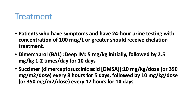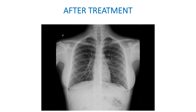Treatment for mercury poisoning is dimercaprol or succimer. Dimercaprol: 5 mg/kg IM, followed by 2.5 mg/kg once to twice daily for 10 days. Succimer: 10 mg/kg every 8 hours for 5 days. After treatment of IV mercury injection, follow-up X-ray shows complete clearance, though some bright spots may remain in the lung fields without causing further problems.